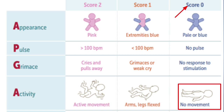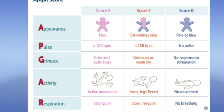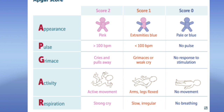The fifth and final parameter is R for Respiratory effort, assessed by the baby's cry. If the baby has a good strong cry, the score is 2. If the baby shows a weak or irregular cry, the score is 1. If there is no cry immediately after delivery, the score is 0.